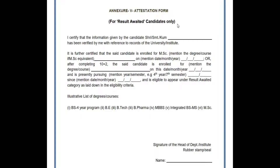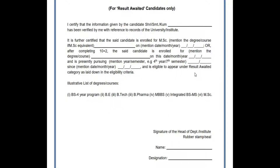Since I have already downloaded the information bulletin, I'll directly open it. This is the attestation form — that is the result awaited form — for candidates who want to apply for the CSR exam and are in the third or final semester of their master's or equivalent degree. Once you download the information bulletin, you need to find the relevant page.